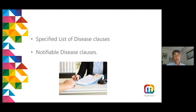Moving on to notifiable diseases: COVID-19 is a notifiable disease. You are likely to have better claims if your policy wording is not so specific as to be limited to specified diseases. If it covers loss triggered just by the occurrence of a notifiable disease, without the policy containing a specified list, then you may have a good claim.